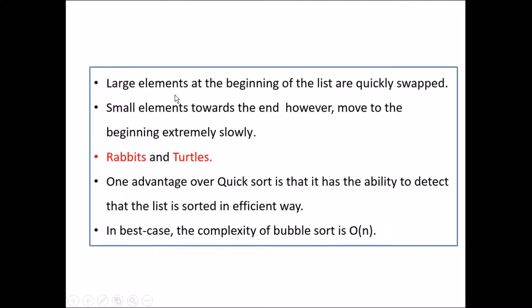Coming to the analysis of this bubble sort, large elements at the beginning of the list are quickly swapped. That is in the first iteration only we can get the largest element. And small elements towards the right end move towards the beginning extremely slowly. That is we can't say whether the smallest element we can get after the first iteration. We can't say whether after 2 or 3 iterations we can get smallest elements towards the left end. That's why these are called as rabbits and turtles.